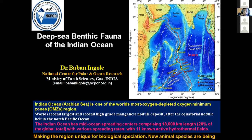The ocean is one of the world's most deoxygenated or oxygen minimum zones, particularly the Arabian Sea, and the Bay of Bengal also. The Arabian Sea specifically also has the world's second largest deposits of manganese nodules available in the central Indian Ocean, next to the Pacific. It also has around 18,000 kilometer long mid-ocean ridge.